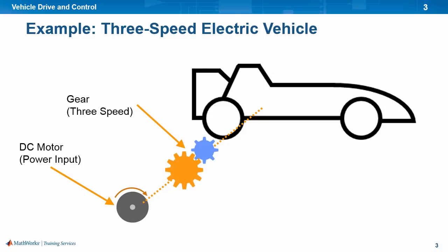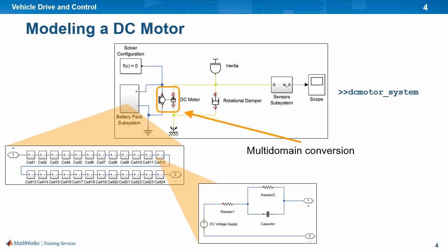We will also create a closed loop controller so that the motor senses and reacts to the vehicle speed. We have already developed a battery powered DC motor system. The battery pack subsystem contains the various cells modeled using the equivalent circuit approach that we discussed in the Simscape introduction video. We then use a DC motor to convert the electrical energy into rotational mechanical energy. Controlling the speed of the DC motor is an important problem.